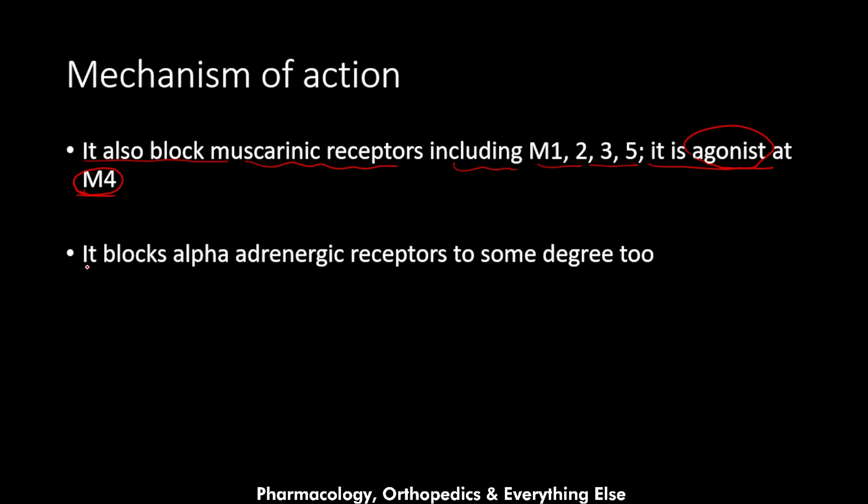Clozapine also blocks alpha-adrenergic receptors to some degree, which are related to blood pressure regulation. Blocking these receptors leads to hypotension and lightheadedness. In summary, clozapine inhibits serotonin, dopamine, muscarinic receptors, alpha-adrenergic receptors, and histamine receptors.